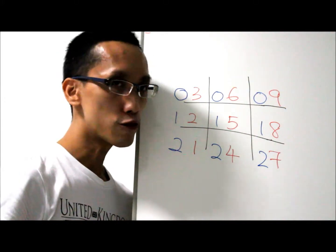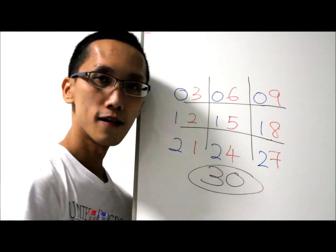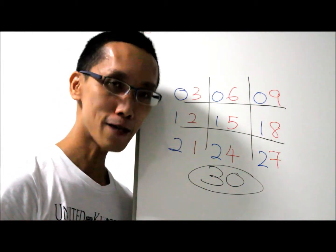Of course, 10×3 is the easiest of all. Just a zero. Simple? Thank you.